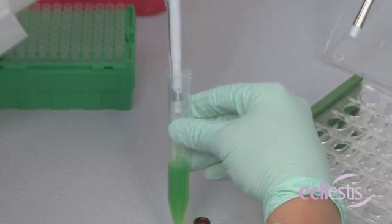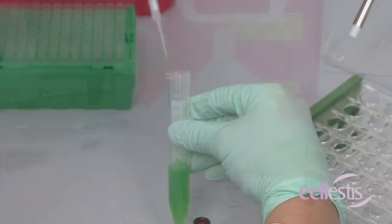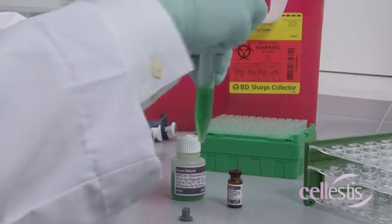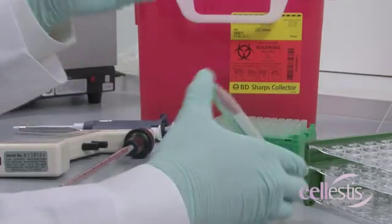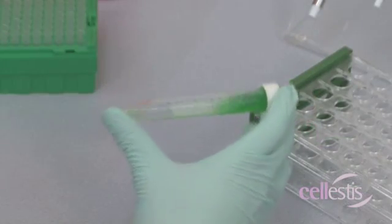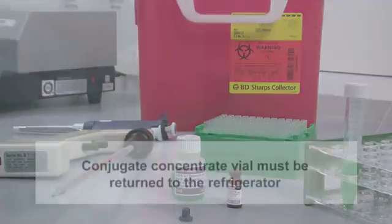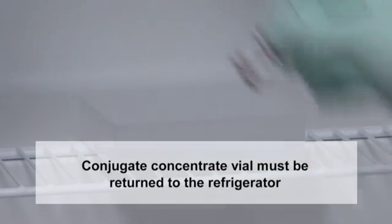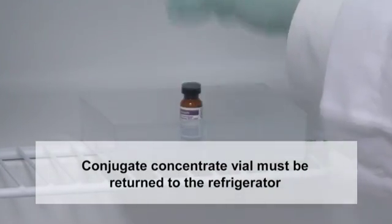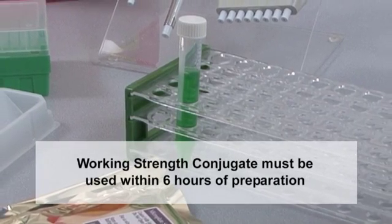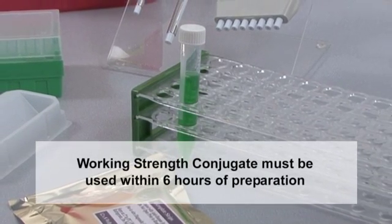Mix the correct volumes of conjugate concentrate and green diluent together thoroughly but gently to avoid frothing. The conjugate concentrate vial must be immediately returned to the refrigerator. Working strength conjugate must be used within six hours of its preparation.